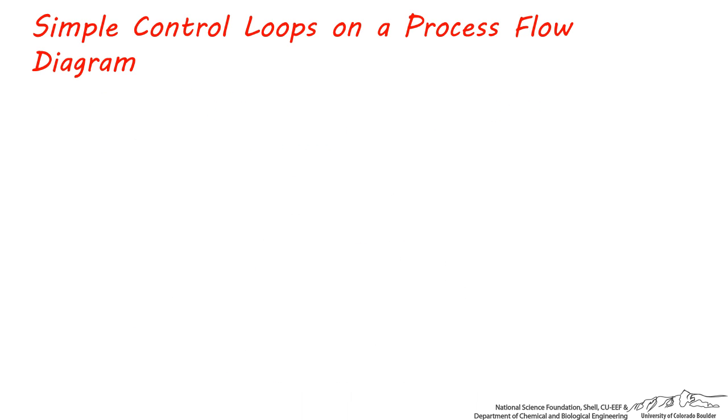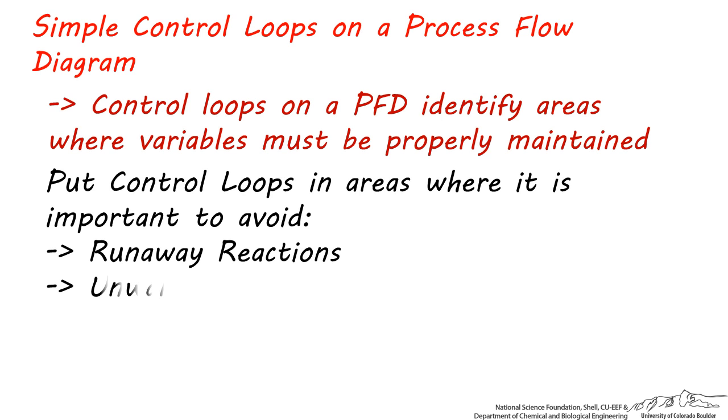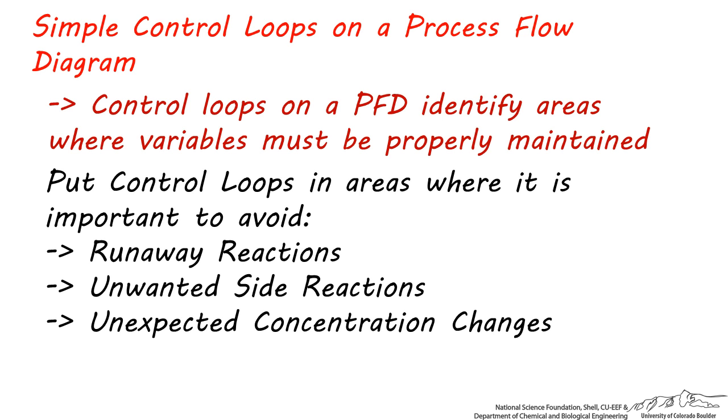Adding simple control loops to a process flow diagram is not absolutely necessary, but it is useful for identifying important areas where controllable variables should be properly maintained in their correct range. These areas of the process have the potential to create runaway reactions, unwanted side reactions, or change the composition of the process stream considerably.